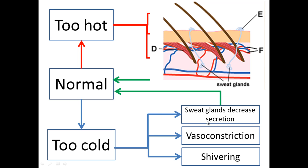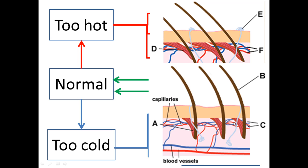These changes are decreased sweat production, vasoconstriction, and also shivering. If you have a closer look, you can see that these erector pili muscles contract, thereby lifting the hairs on your skin and therefore trapping air in between them.